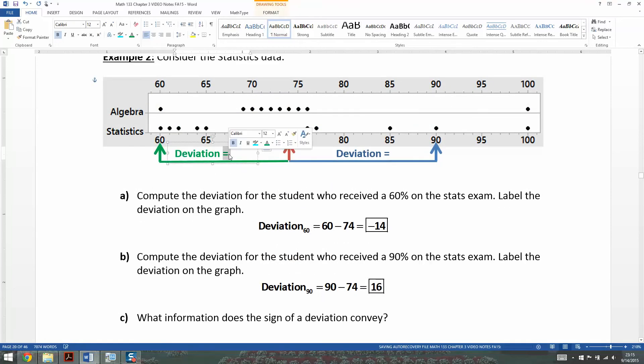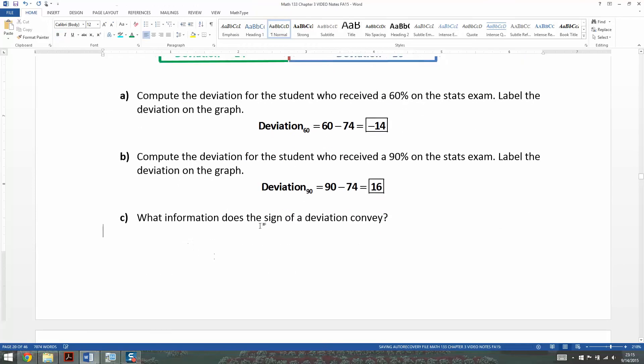Well, first of all, this one right here is negative 14, and the one over on the right, the blue one, is positive 16, which leads us to the conclusion that if your deviation is positive, it means you're on the right of the mean, and if your deviation is negative, it means you're to the left of the mean or below the mean.